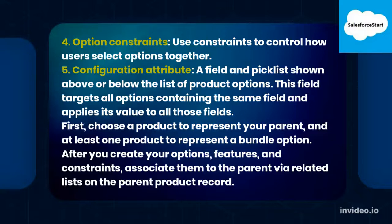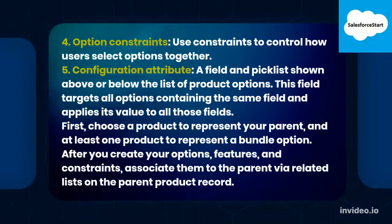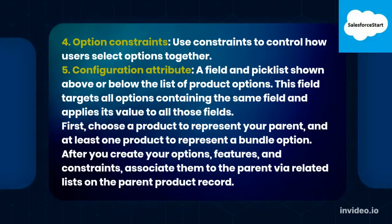4. Option Constraints — use constraints to control how users select options together. 5. Configuration Attribute — a field and picklist shown above or below the list of product options; this field targets all options containing the same field and applies its value to all those fields. First, choose a product to represent your parent, and at least one product to represent a bundle option. After you create your options, features, and constraints, associate them to the parent via related lists on the parent product record.